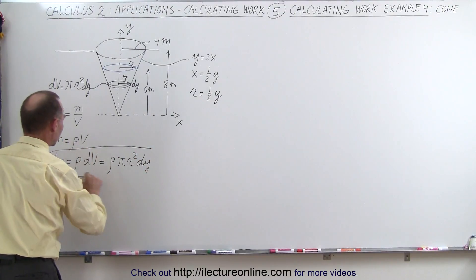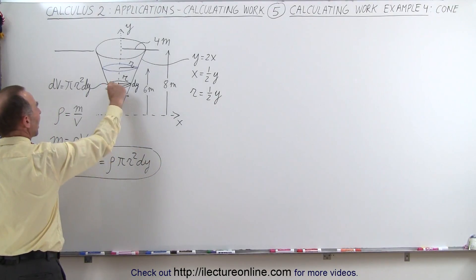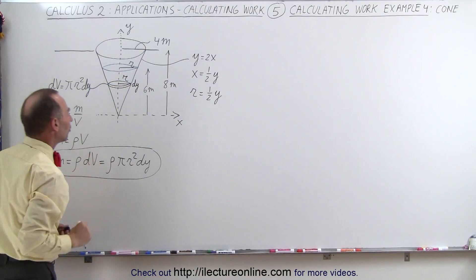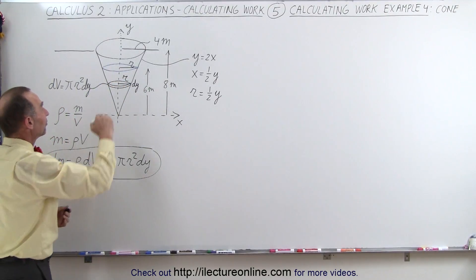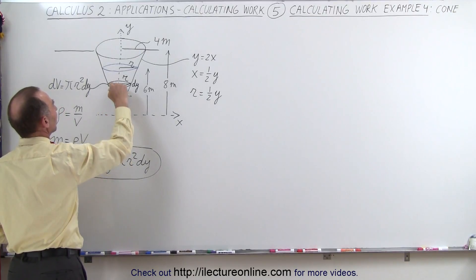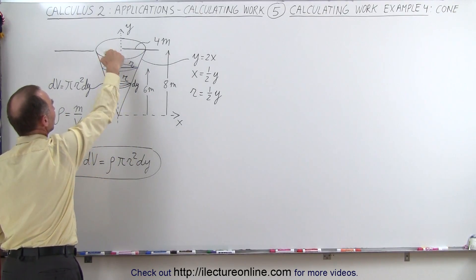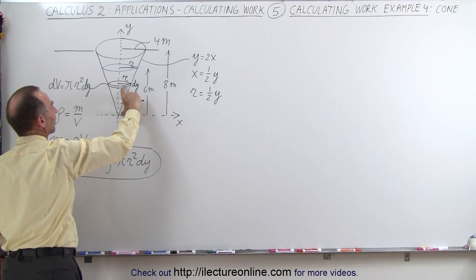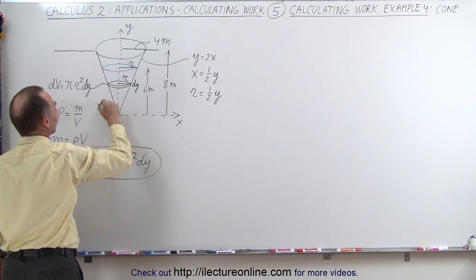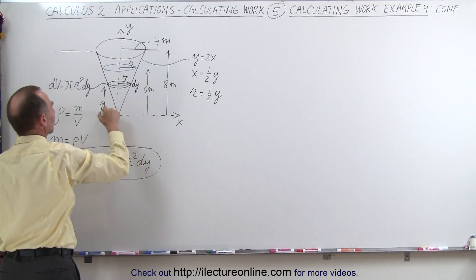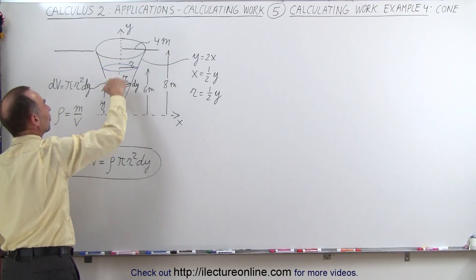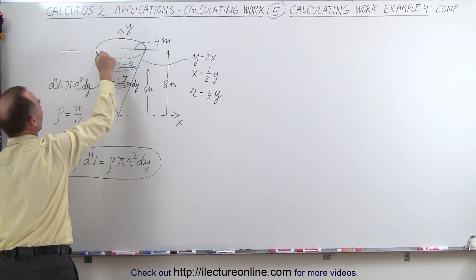So now we have an expression that tells us the amount of mass of water is in that small little slice. And we now will have to lift that up to the top. What is the distance from there to there? Well, if we take the total distance to be eight and subtract from that the height of that little slice, which is y. So y would be the height from there to there. That means the amount of distance we have to lift it. Let's call this distance h.